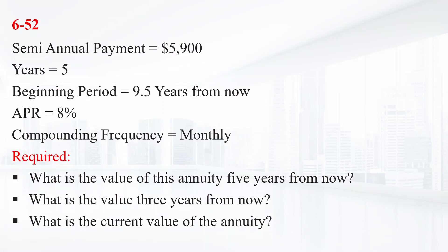A five-year annuity of ten fifty-nine thousand dollar semi-annual payments will begin nine years from now, with the first payment coming 9.5 years from now. If the discount rate is eight percent compounded monthly, what is the value of this annuity five years from now, three years from now, and what is the current value?